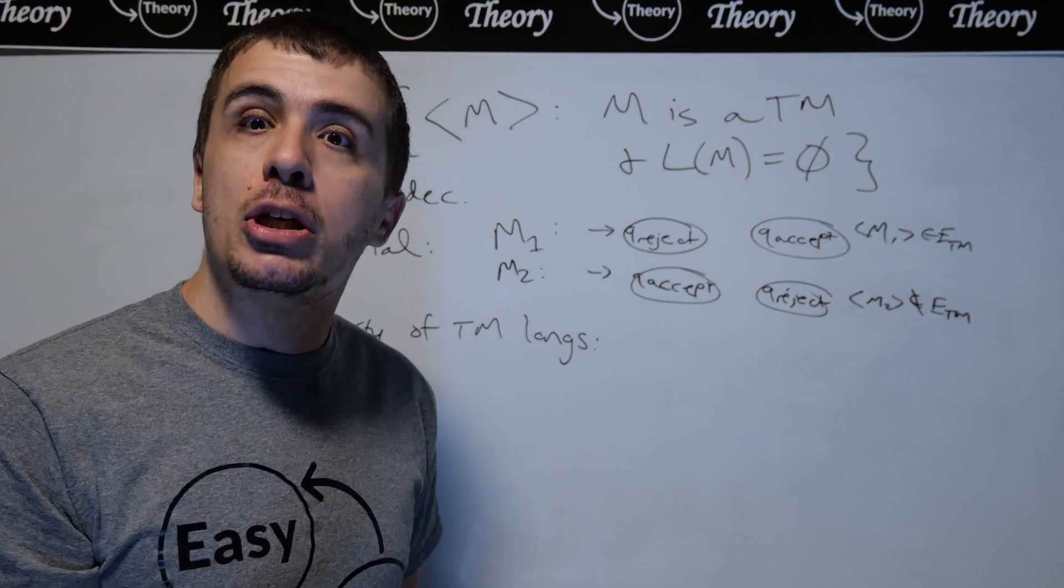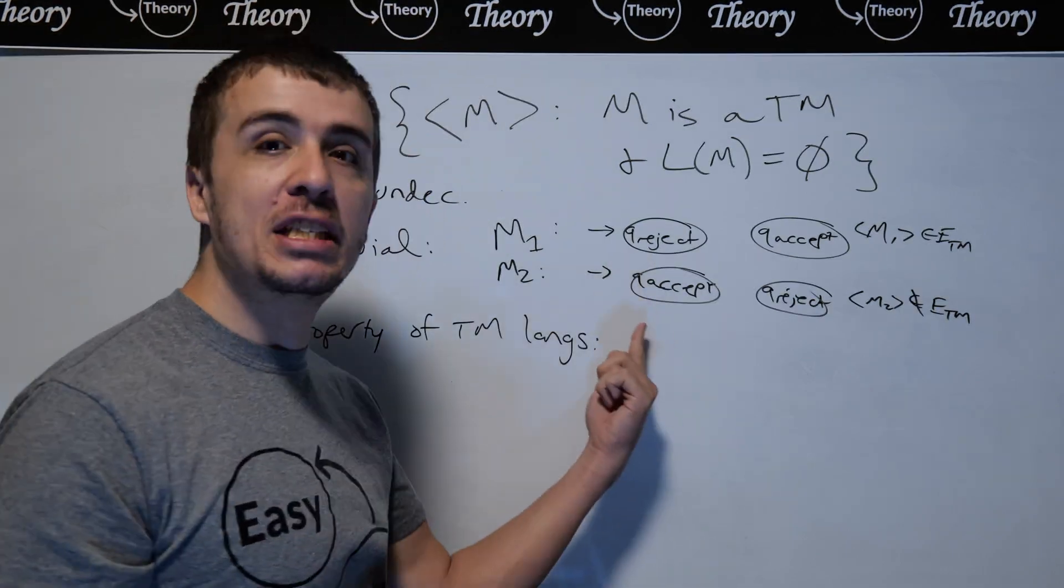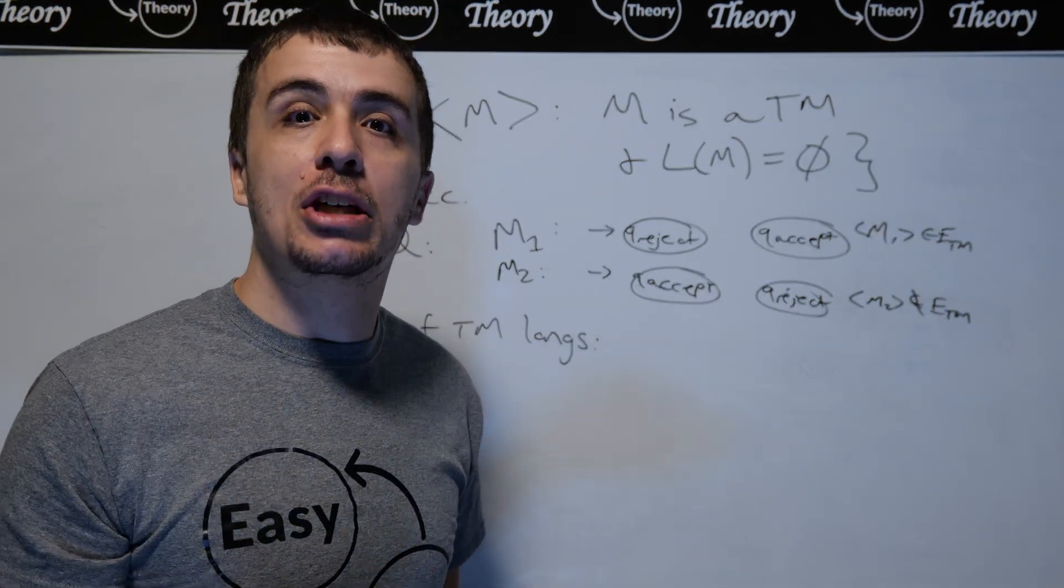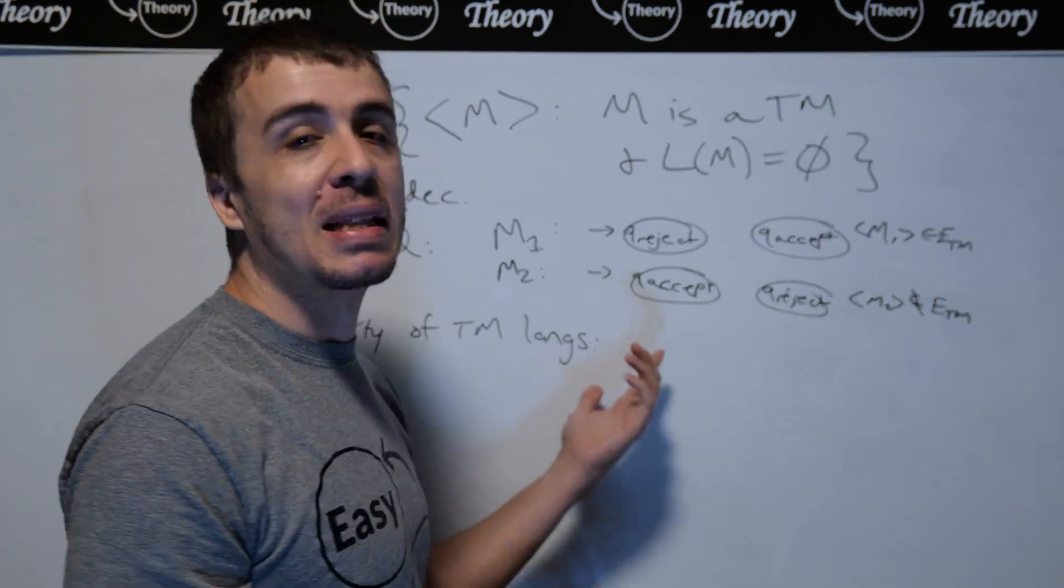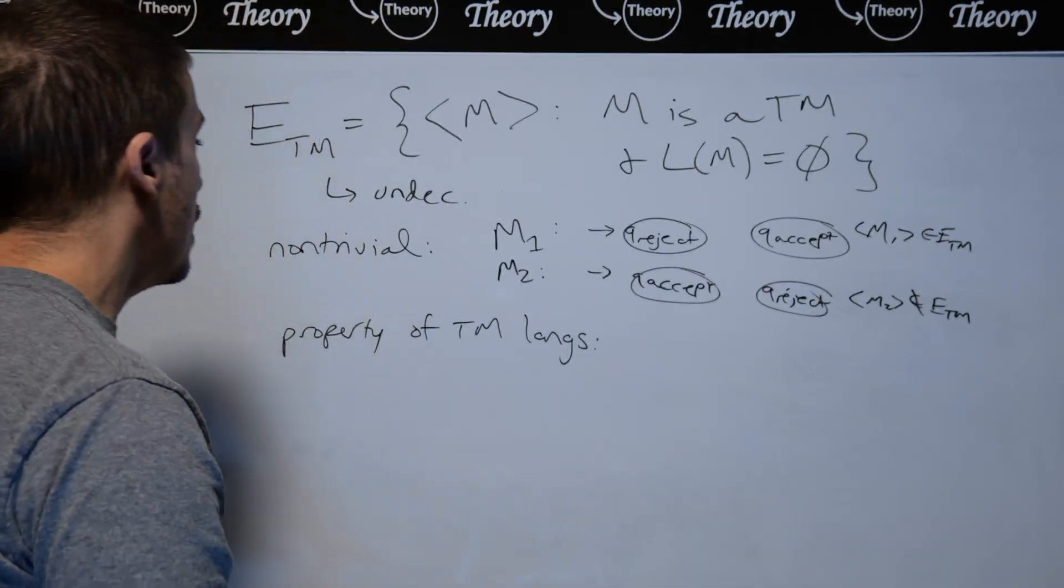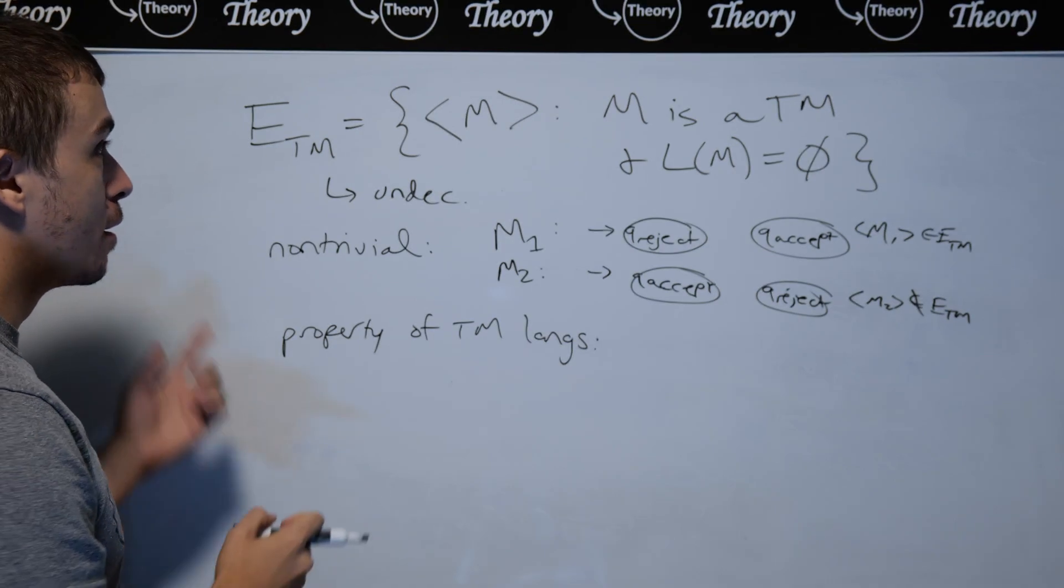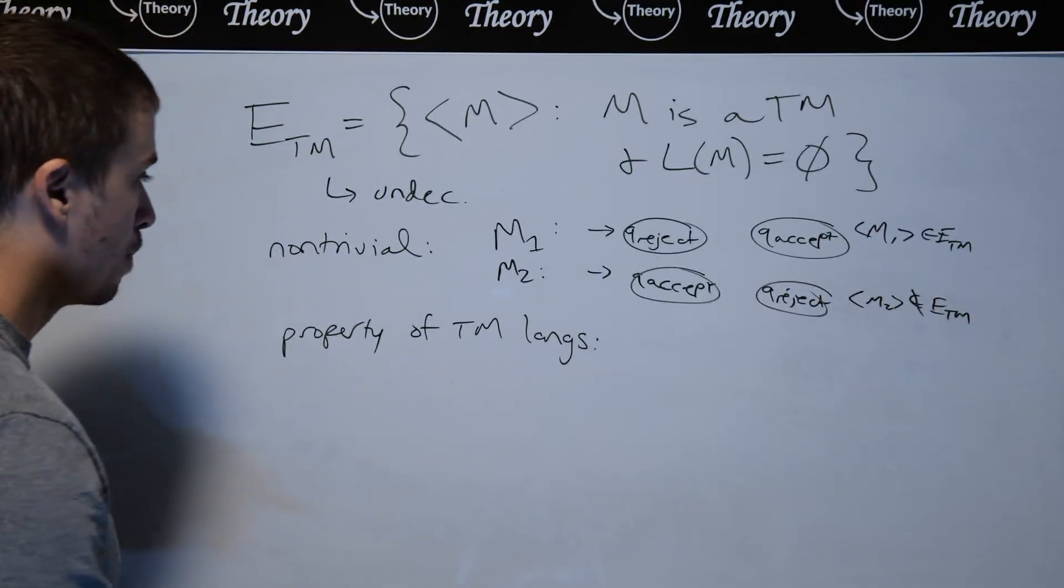I could have picked any machine that I wanted. It doesn't have to be this specific one, but it's a good idea to pick something that's very, very easy to deal with. So therefore, this property called ETM is non-trivial.